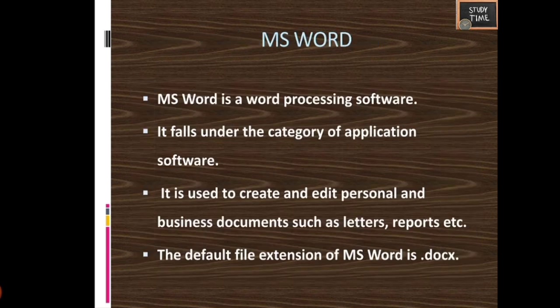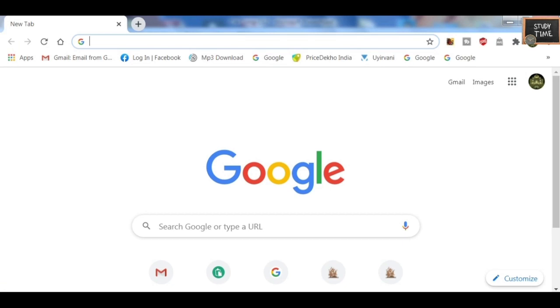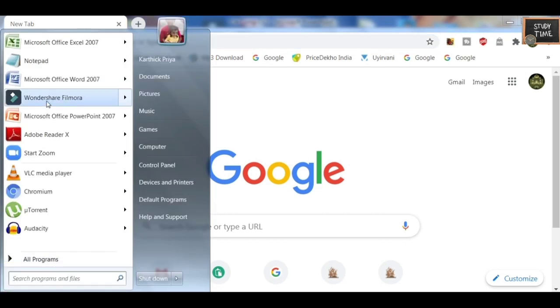What is MS Word? MS Word is a word processing software. It falls under the category of application software. It is used to create and edit personal and business documents such as letters, reports, etc. The default extension of MS Word is .docx.